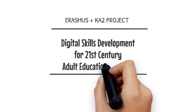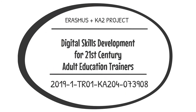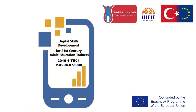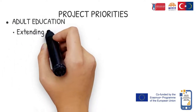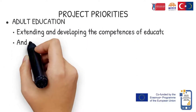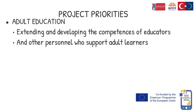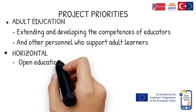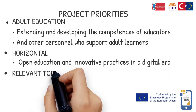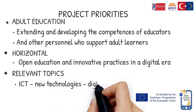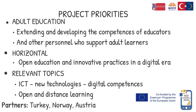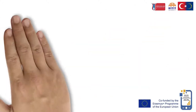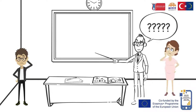Digital skills development for 21st century adult education trainers. Project priorities: adult education, extending and developing the competences of educators and other personnel who support adult learners. Horizontal open education and innovative practices in a digital era. Relevant topics include information communication technologies, new technologies, digital competences, open and distance learning. Partners: Turkey, Norway, and Austria.